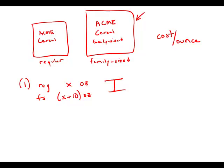Now block statement one out of your mind. Think only about statement number two. Statement number two tells us that the family-sized box costs five dollars and forty cents. Well, that is useful.